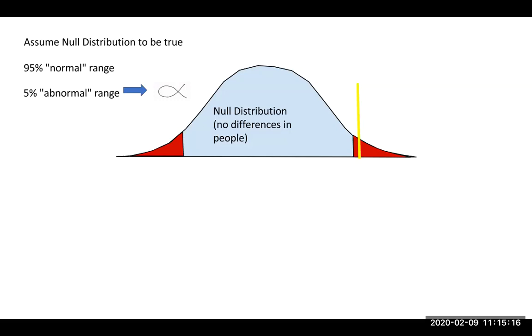Is it more likely that that's the case or is it more likely that Bob comes from a totally different distribution of smart people? So this green distribution here, we call this the alternative distribution. This is a different set of people.